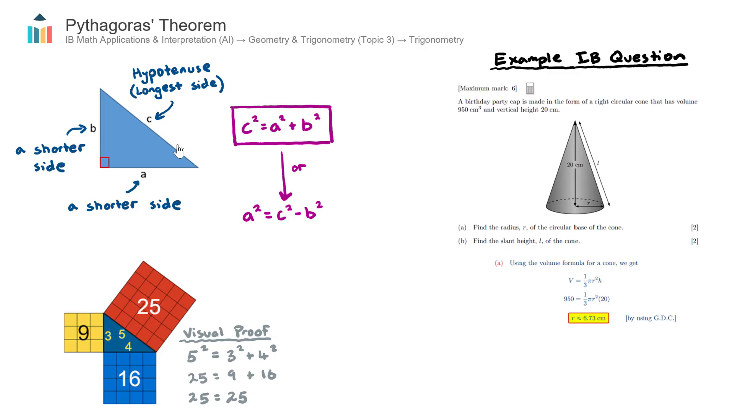This longest side, if you're ever wondering how do I identify the longest side, it is always opposite the right angle. And we call that the hypotenuse, the longest side. The other two sides I tend to just call shorter sides. So the longest side squared is equal to the sum of the other two sides also squared.